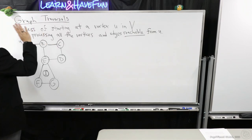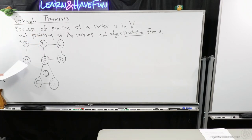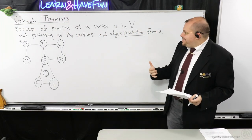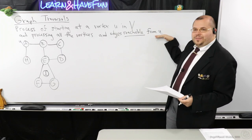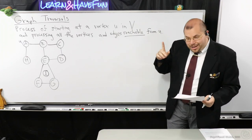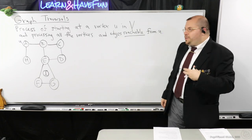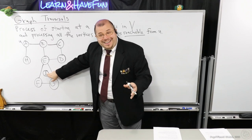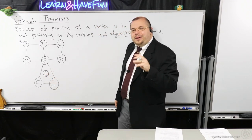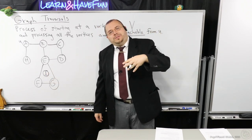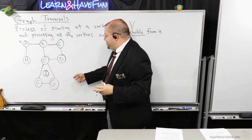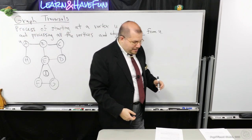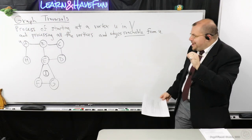A graph traversal means you have some starting vertex, and you'd like to process all the vertices and edges reachable from that vertex. If you want to process the entire graph and I is isolated, that means you need to restart this process and bootstrap it starting from I. We're going to start very basic right now.